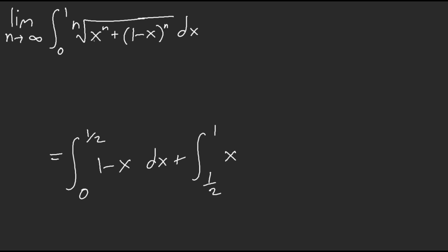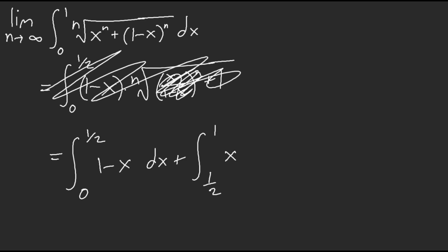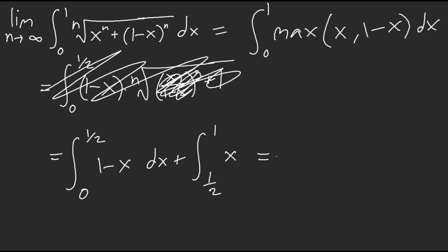Which is bigger really depends on the interval. From 0 to 1/2, 1 minus x is bigger, so we factor out 1 minus x and do x over (1 minus x) to the power of n plus 1. Because 1 minus x is bigger, x/(1 minus x) is between 0 and 1, so this equals 0 — that same green limit concept. This is equivalent to just the integral of max(x, 1 minus x) from 0 to 1. When you integrate this, this should simply equal 3/4 after basic integration.